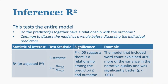Here's an example of how you could interpret this output. Looking at R-squared, the test statistic is the F statistic, which gives us the P-value. If it's less than 0.05, that suggests there's a relationship among the predictors and the outcome. One way to interpret this: the model that included word count explained 46% more of the variance in narrative quality and was significantly better than the null model.